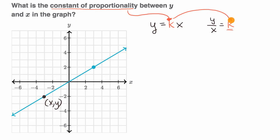So with that out of the way, see if you can answer their question. What is the constant of proportionality between y and x in the graph? Well, they very clearly give us a point right over here. This point is the point three, three comma two.